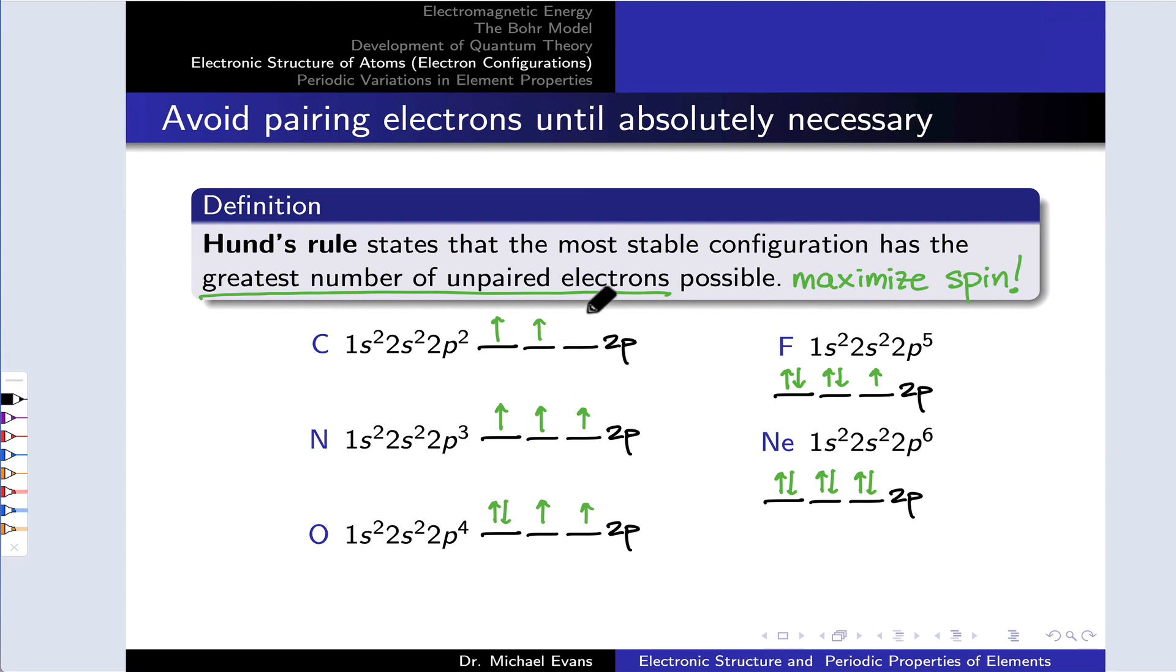So for example, after boron, when we get to carbon, and we add a second electron to the 2P subshell, we don't pair it up with the first electron. We add it parallel in a different orbital within the 2P subshell. Pairing the electrons would result in greater electron-electron repulsion since they would be associated with the same probability distribution over space and occupying the same regions of space. Putting the electrons in different orbitals gives them different spatial distributions, and thus electron-electron repulsion is reduced.